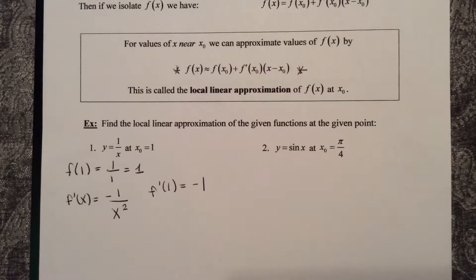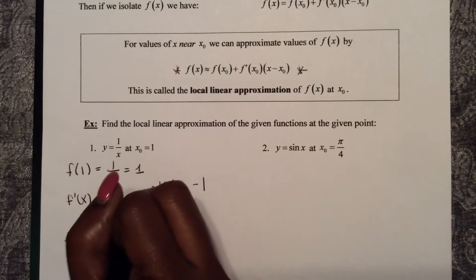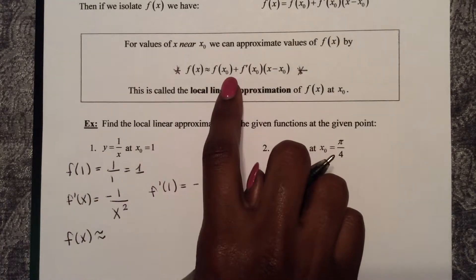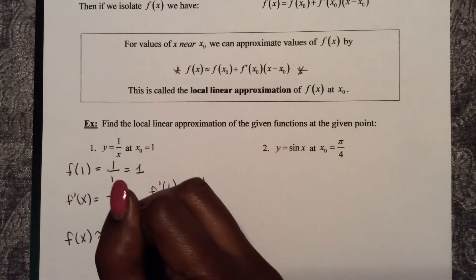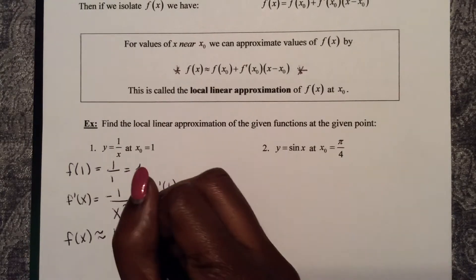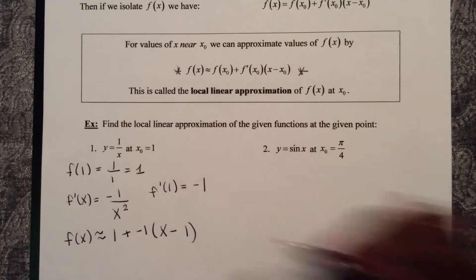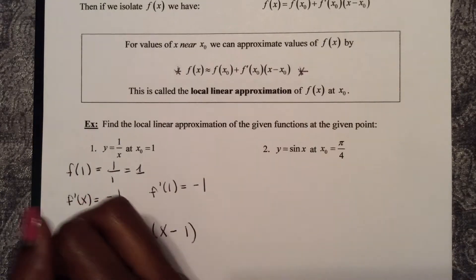So now I can create my linear approximation for f of x at x equals 1. So f of x is approximately f of 1, which is 1, plus f prime of 1, negative 1, times x minus 1.